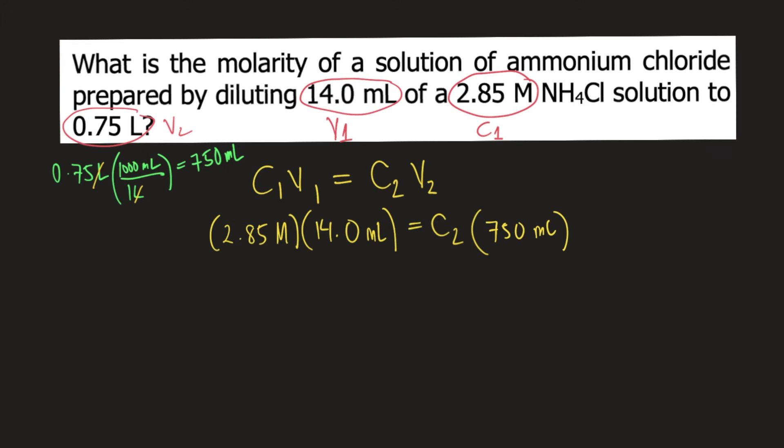To solve for C2, divide both sides of the equation by 750 mL. On the right side, 750 mL would cancel, and what is left is C2.